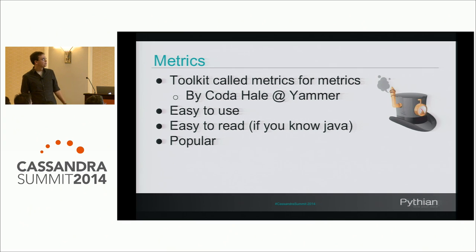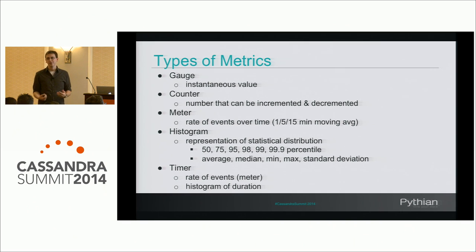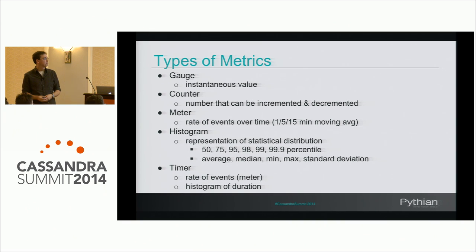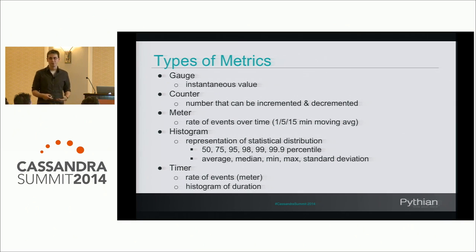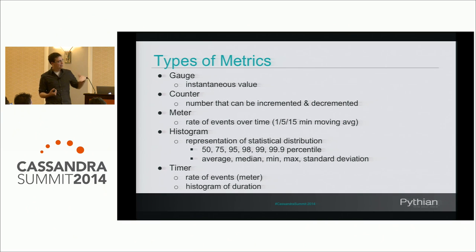In Metrics, there are several types and Cassandra uses pretty much all of them. The simplest is a gauge — just a value, which can be a string, array of strings, integer, or similar. A counter is something that's incremented or decremented. A meter is the rate of things, such as requests per second or per minute, and keeps one, five, and fifteen minute moving averages. A histogram gets more interesting — it's the statistical distribution of your data, keeping percentiles along with mean, average, and standard deviation.